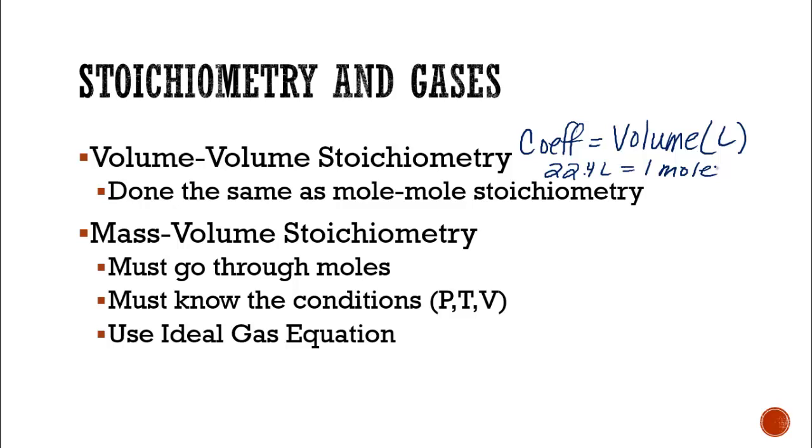When we do mass-volume stoichiometry, if we are in STP, we can basically run it using 22.4 liters in one mole. And we can use that to get through our stoichiometry. However, if we are not in STP, our standard temperature and pressure, then we must know the conditions. We need to know P, V, and T because we have to, at some point, plug it into our ideal gas equation because we are still going through moles. Let's see how this is done.